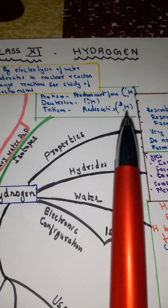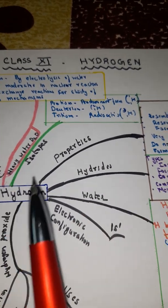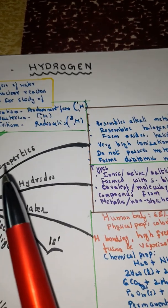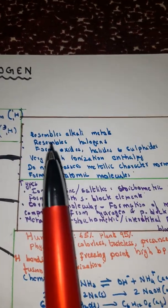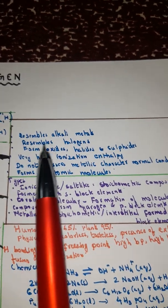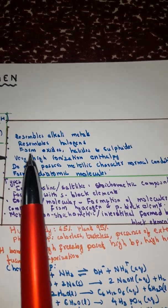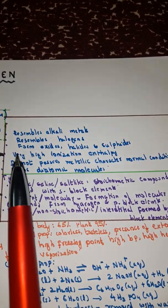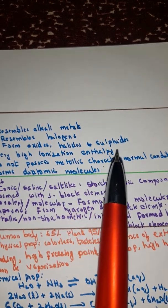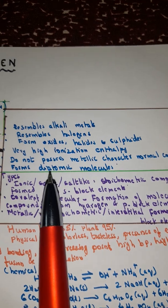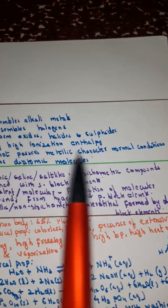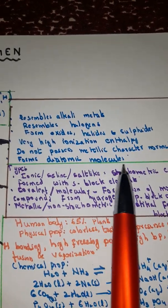Now here we have the properties of hydrogen. They resemble alkali metals, resemble halogens, form oxides, halides and sulfides. Very high ionization enthalpy, do not possess metallic character under normal conditions, and they form diatomic molecules.